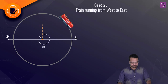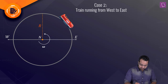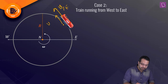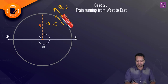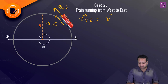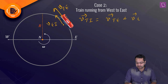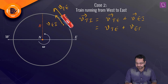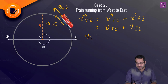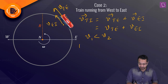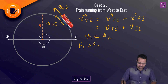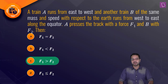In scenario two, train B moves from west to east — the same direction as the earth's rotation. So V_train,inertial = V_TE + V_EI; the magnitudes add. Therefore V1 < V2, meaning the speed in scenario one is less than in scenario two. Since smaller speed gives larger normal force, F1 > F2. Option C is the correct answer.